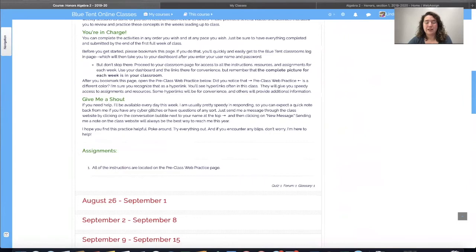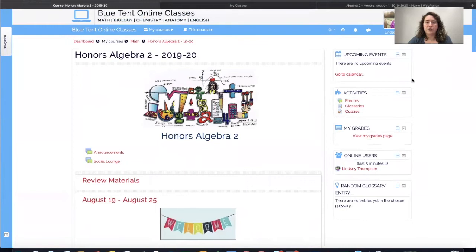Going up to the top, on the right, you'll have your calendar, which will show you what is due and when. Activities, which will just easily take you to any assignment or resource that you might want to see. A link to your grades. And a list of who is online or has been online recently.